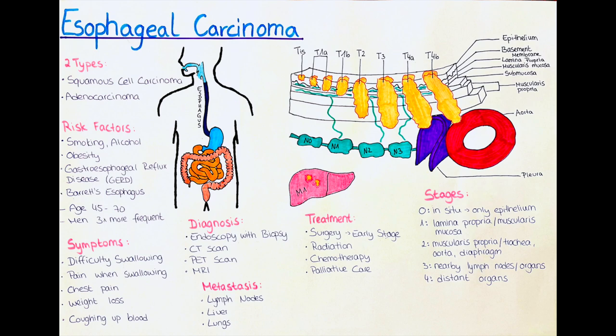The stages are as follows. Stage 0: the cancer is only in the inner layer of the esophagus, also known as carcinoma in situ. Stage 1: the cancer has grown through the inner lining into the next layer or muscle layer of the esophagus. Stage 2: the cancer has grown into the outer layer or nearby tissues such as the trachea, aorta, or diaphragm. Stage 3: the cancer has spread to nearby lymph nodes or other organs such as the lungs. Stage 4: the cancer has spread to distant organs such as the liver or bones.